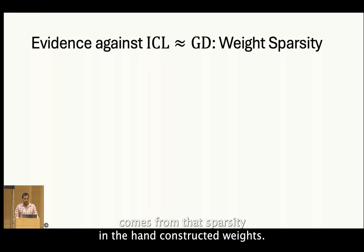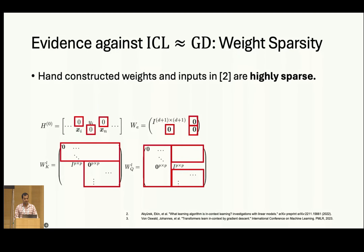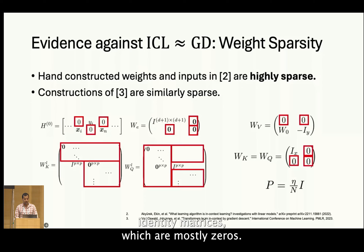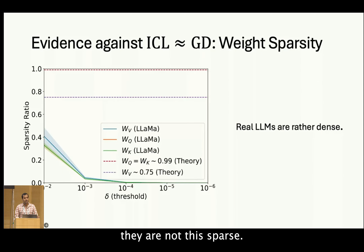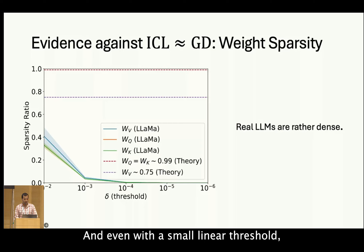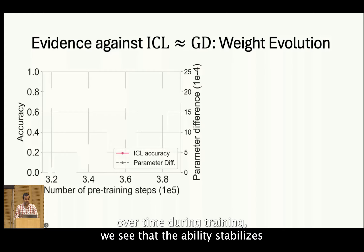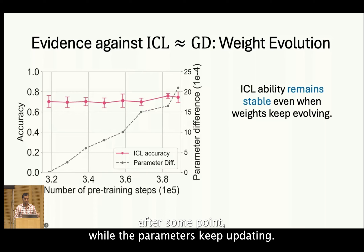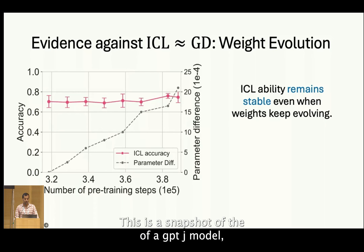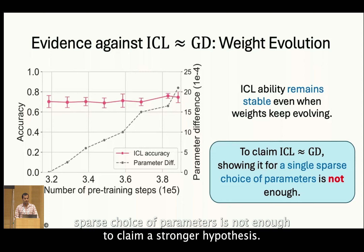Another evidence against the formulations comes from the sparsity in the hand-constructed weights. These hypothetical weights are highly sparse and consist of a lot of zeros. Even the non-zero matrices are identity matrices, which are mostly zeros. If you look at real LLMs, they are not this sparse. We plot the percentage of parameters with absolute values less than a certain threshold, and even with a small threshold, we find that the LLaMA model weights are quite dense compared to these theoretical weights. Moreover, if you plot the performance of the language model on ICL tasks over time during training, we see that the ability stabilizes after some point while the parameters keep updating — this is a snapshot of a GPT-J model at different training checkpoints. Therefore, showing that an equivalence exists for a single sparse choice of parameters is not enough to claim a stronger hypothesis.